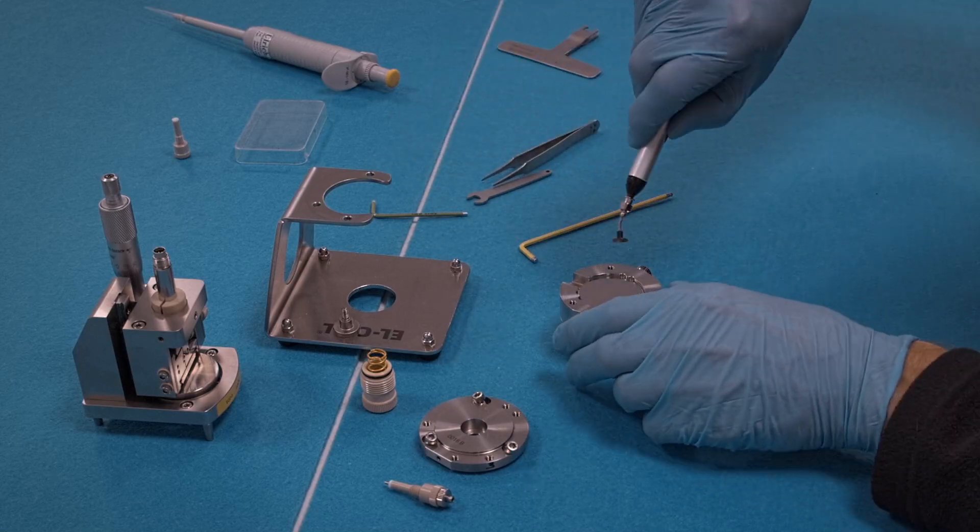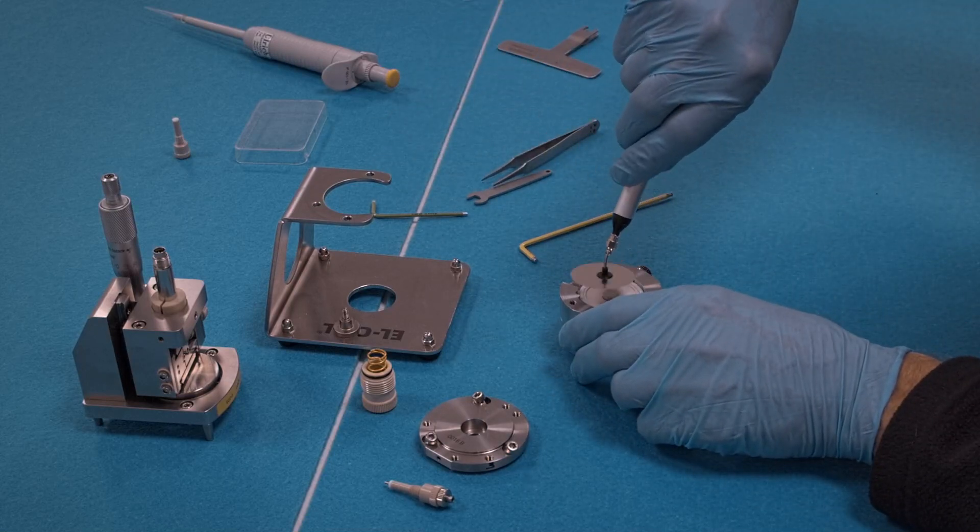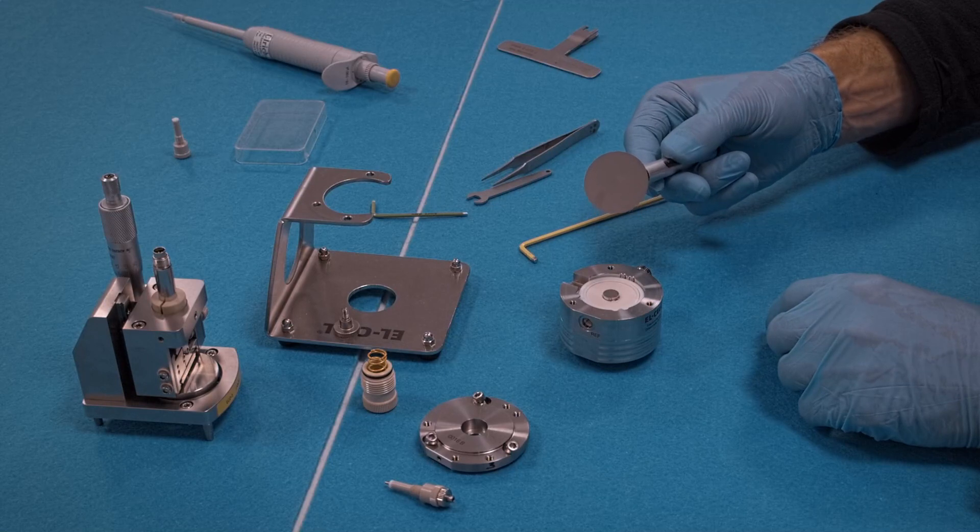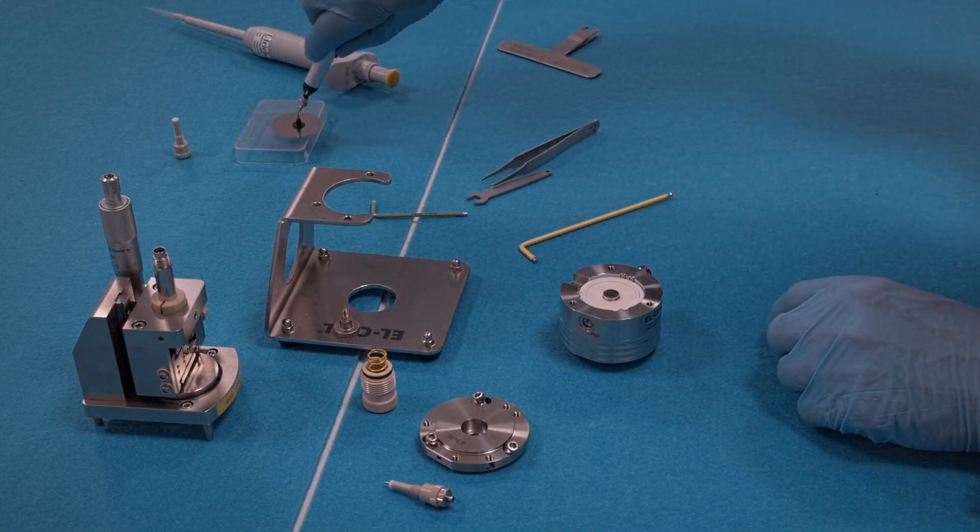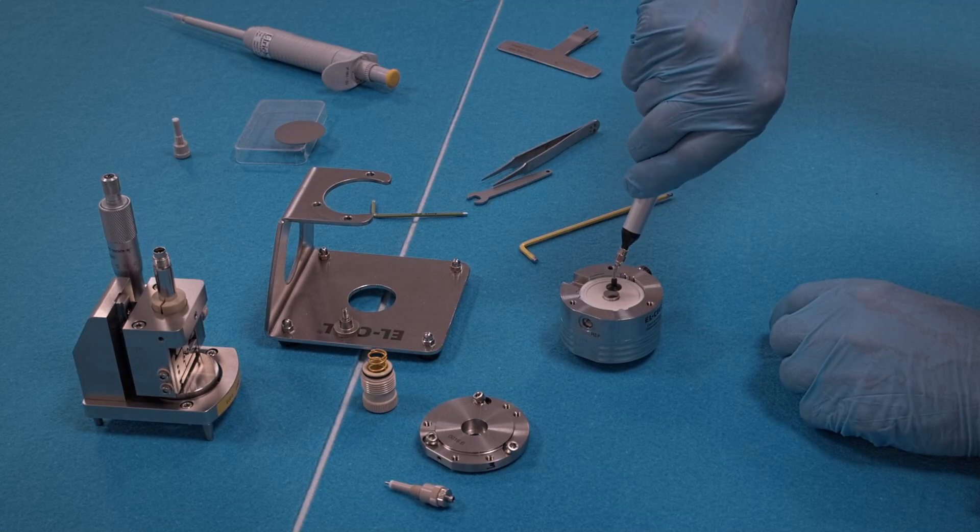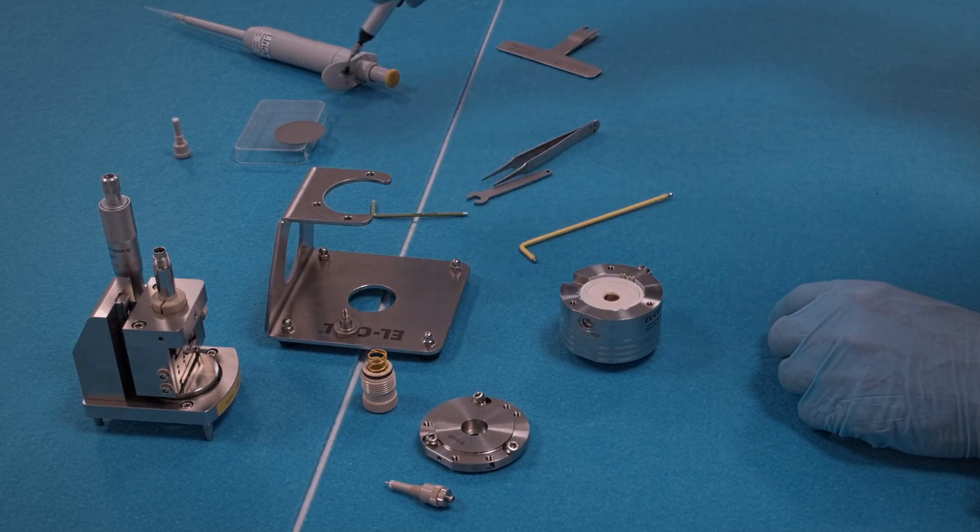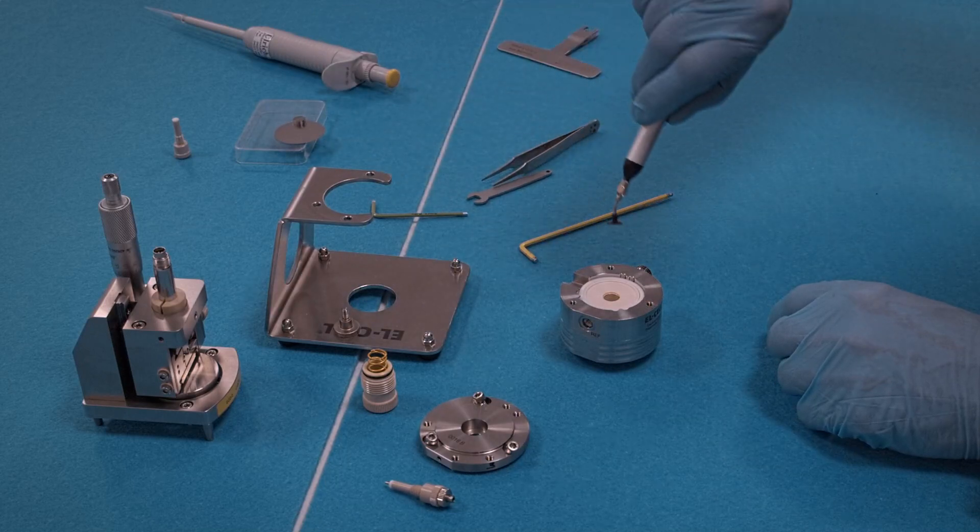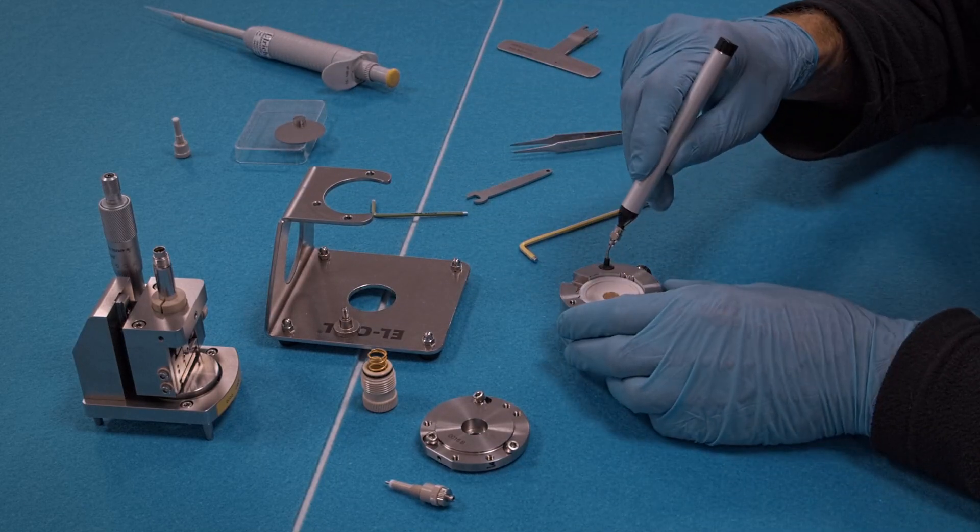Dispose the metal membrane, the metal foil. Remove the spacer disc which can be reused after cleaning and drying. Dispose the working electrode.